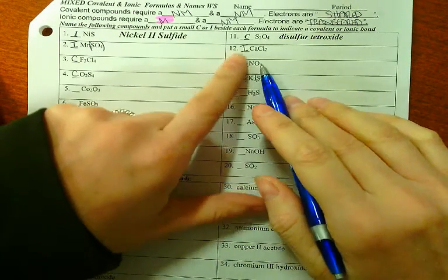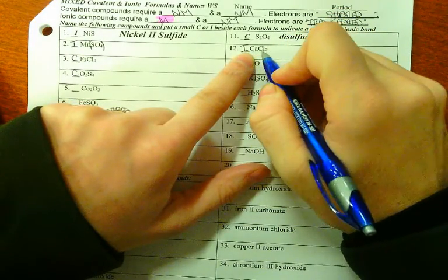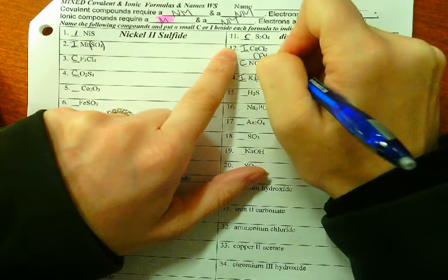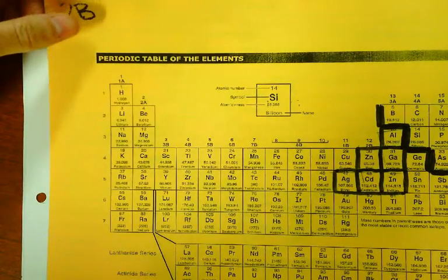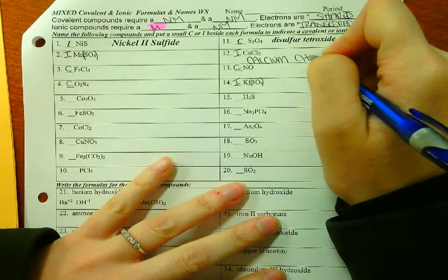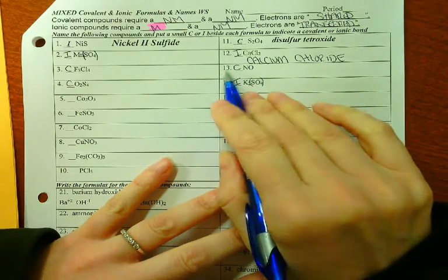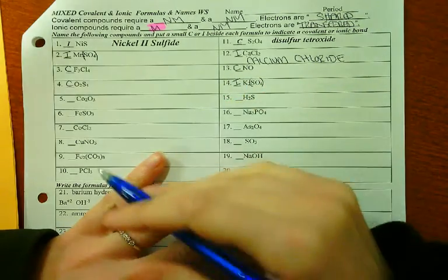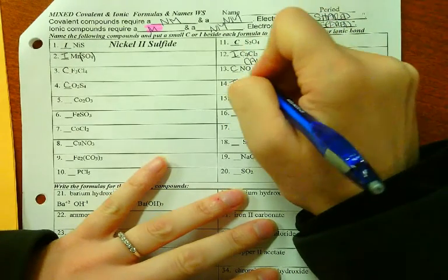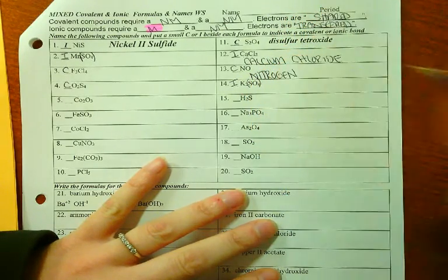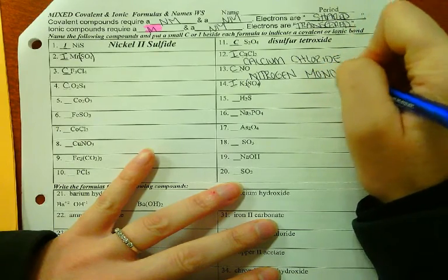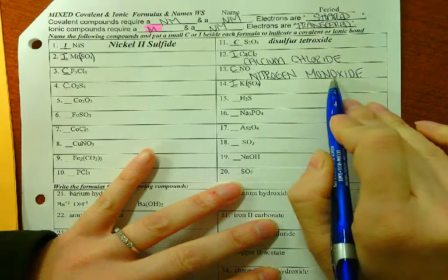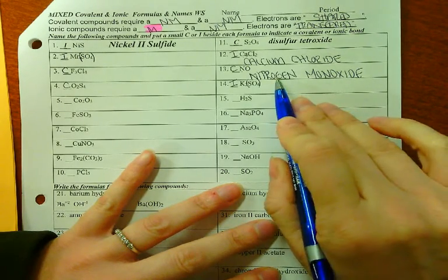I'll use ionic naming rules for the ones I put I's by. You name the metal, name the nonmetal, and turn it to -ide. I'm going to say calcium, then check for Roman numerals. Calcium is in the 2A family, so A always makes plus 2, which means I just call it calcium. And chlorine becomes chloride. Number 13 is covalent because there's only nonmetals. One nitrogen, I just call nitrogen. One oxygen, if it's the second element, I say mono. So nitrogen monoxide.